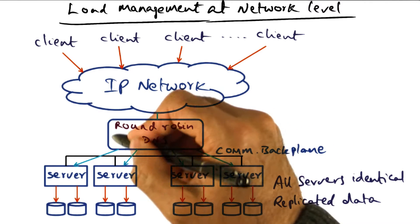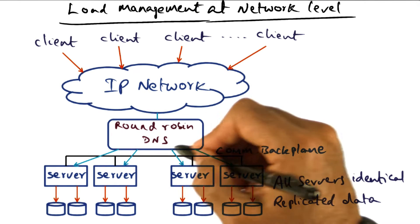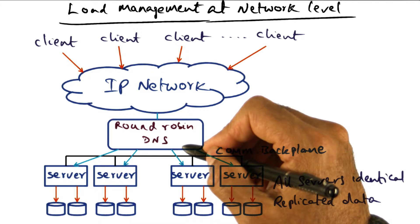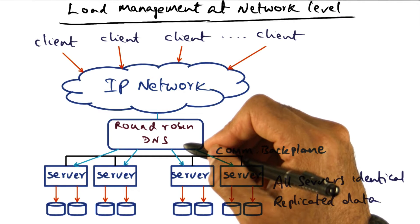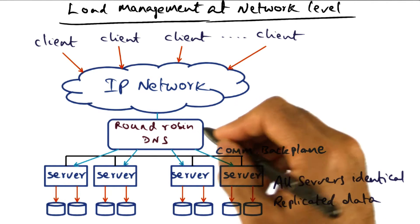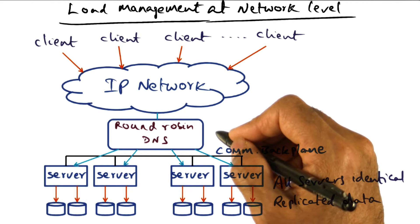The load manager may be operating at the network level — that is, at the network layer level of the seven-layer OSI reference model. In this case, the load manager is simply a round robin domain name server.